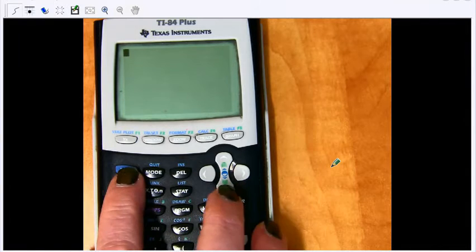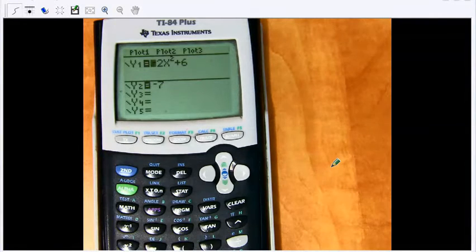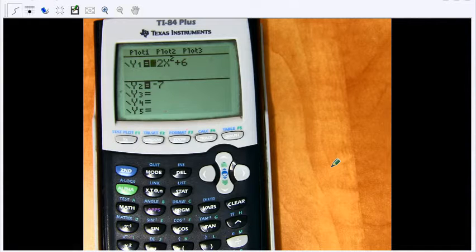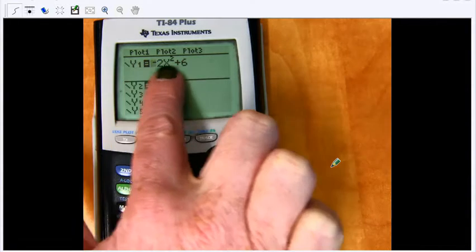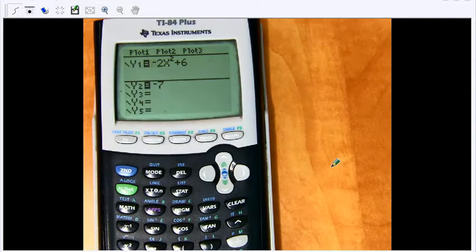You're going to enter this into y equals on your calculator. I already took the liberty of doing that a little bit ago. So I have my upper function, which was the upside down parabola as y1, and then the horizontal line, y equals negative 7, is my lower function, y2.